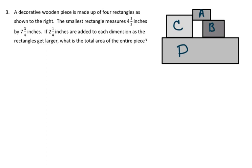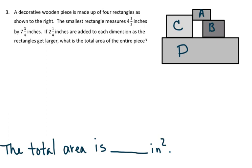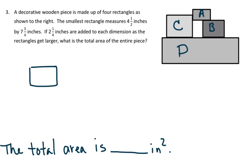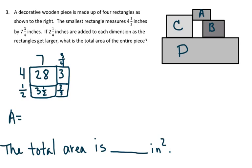Let's go ahead and write a target sentence: The total area is blank inches squared. We know that the smallest rectangle, which is A, has the dimensions of four-and-one-half by seven-and-three-fourths. Here's my area model of that. We're going to go ahead and do the multiplication to find the area of each one of the rectangles. When I add all the products together, I have thirty-four-and-seven-eighths.